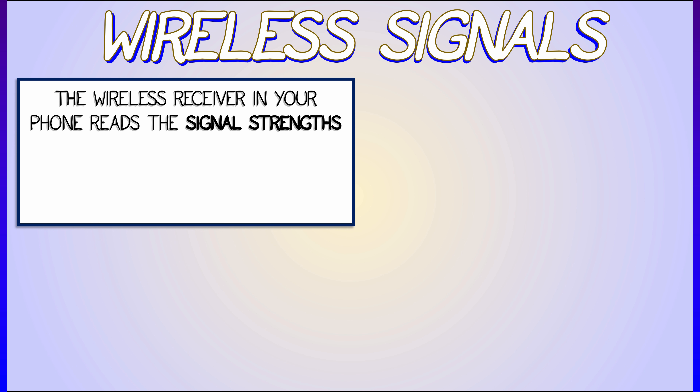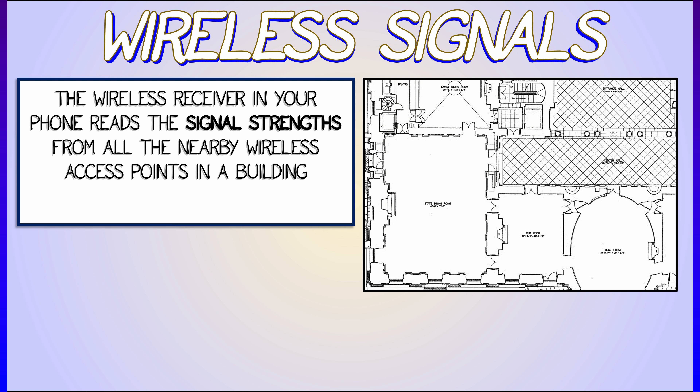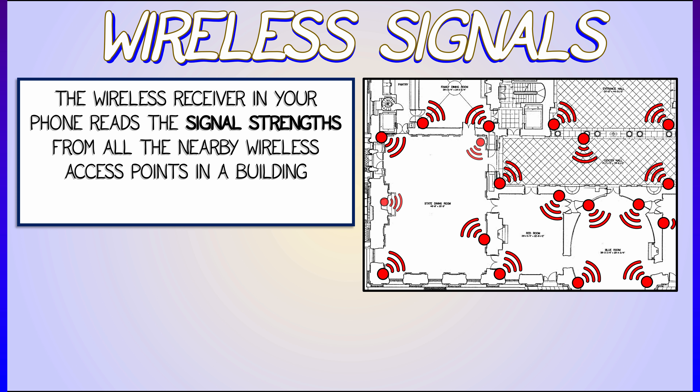Here's an example involving wireless signals. If you think about the wireless receiver in your phone that connects to a network, it's registering signal strengths from all the nearby wireless access points in a building. Let's say you've got a building — maybe there's just one wireless network, but there are many access points, many routers — those little things with the antennae on top. So you are at every single point in time registering signal strengths.